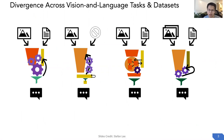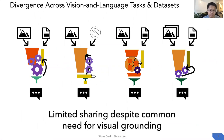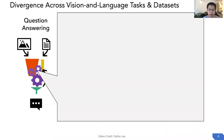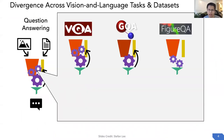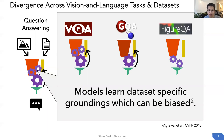One obvious problem is there's only limited sharing despite the common needs for visual grounding. Take question answering as an example — we have tasks such as VQA, GQA, and FigureQA. Each model is designed for a specific dataset, so the model may learn dataset-specific groundings which can be biased.